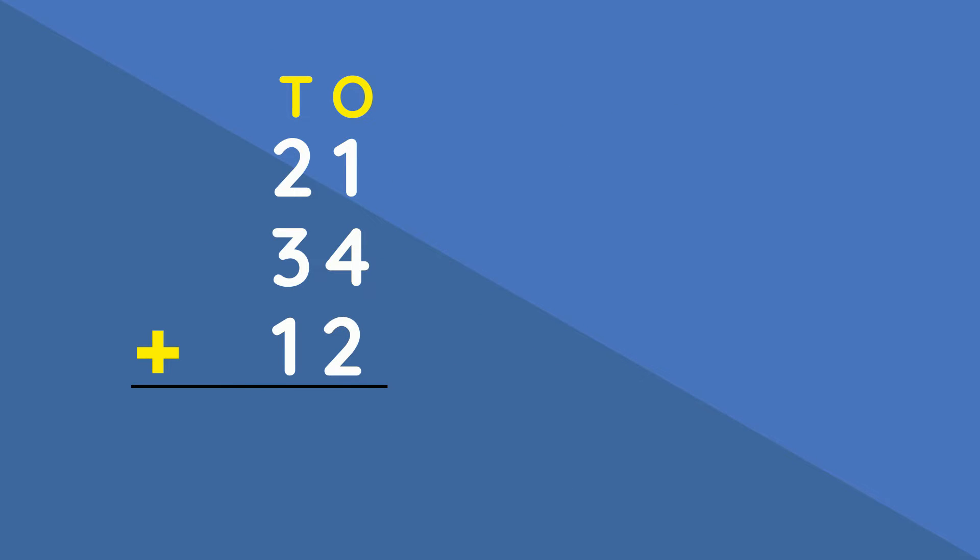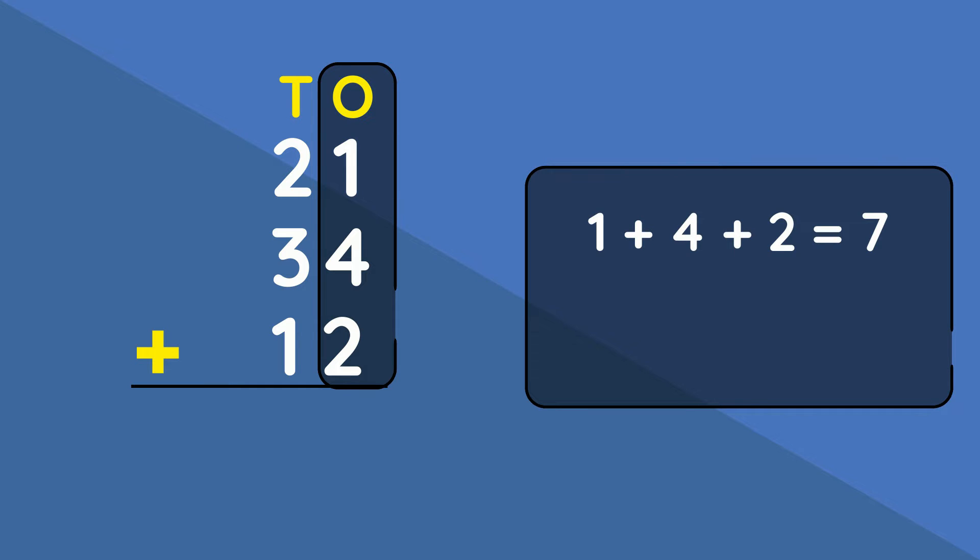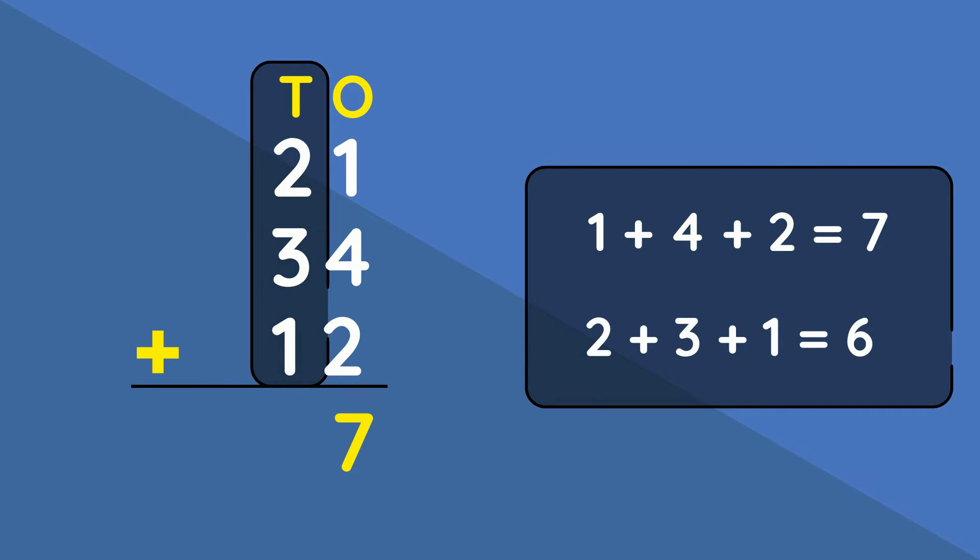We must always begin adding the ones column first. One added to four added to two gives us seven. Then two added to three added to one gives us six. Did you get 67?